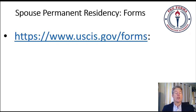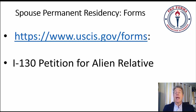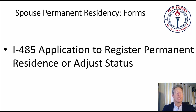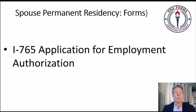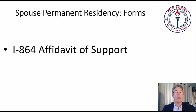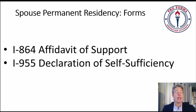We're going to start with your forms — go online to USCIS.gov and download them to your hard drive and save them. The forms are: I-130 petition for alien relative, I-130A supplemental information for spouse beneficiary, I-485 application to register permanent residence or adjust status, I-765 application for employment authorization, I-131 application for travel document, I-864 affidavit of support, and the I-955 declaration of self-sufficiency.